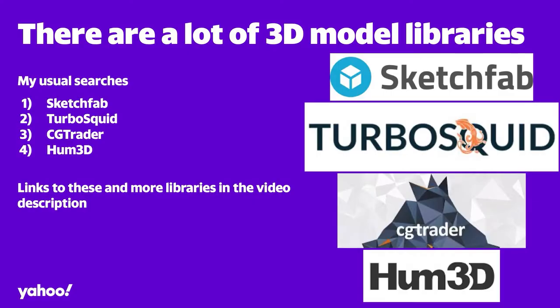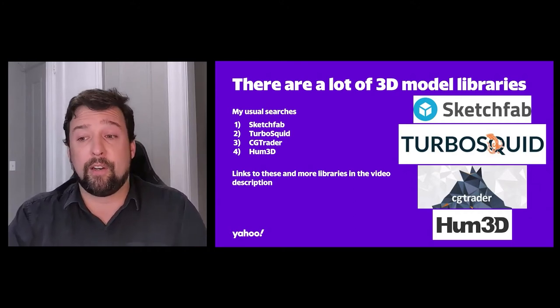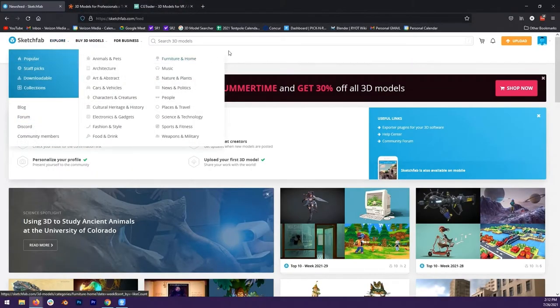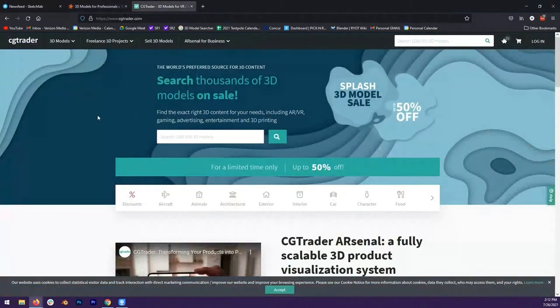With the plan in mind, I can go looking for 3D model libraries. There are over 50 websites that position themselves as libraries — some for 3D printing, some for cars, some for consumer packaged goods — but my usual searches are Sketchfab, TurboSquid, CG Trader, and Hum3D. These are the ones we go to most often for our productions, and you'll find links to these and more in the video description. On screen you can see I'm currently looking at Sketchfab, TurboSquid, and CG Trader, each of which includes a search box.